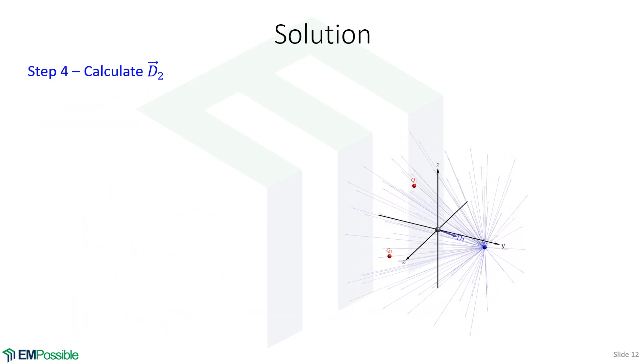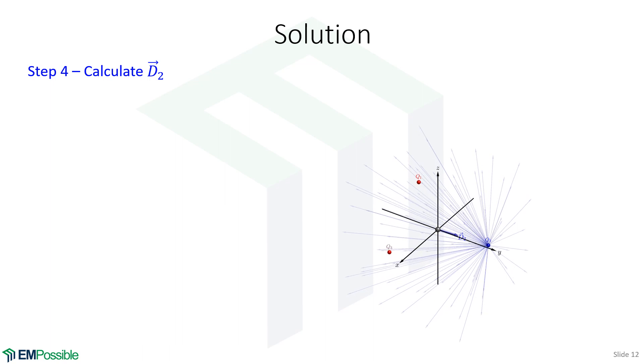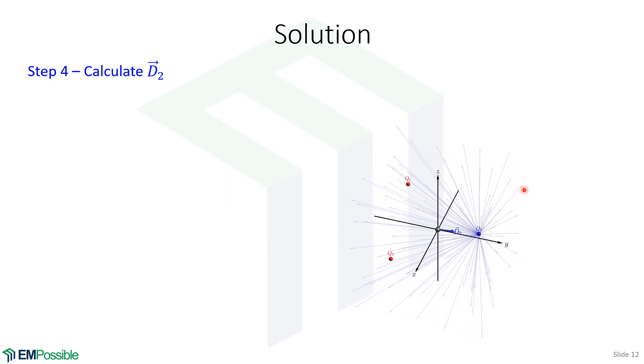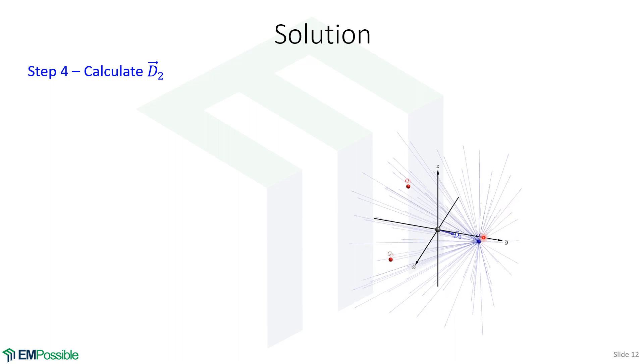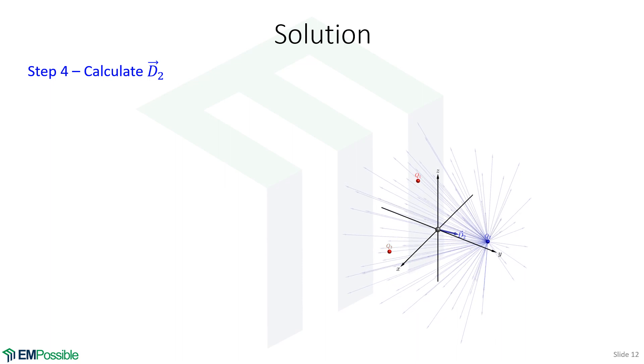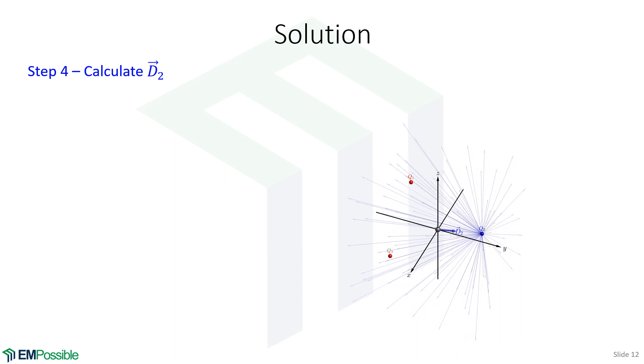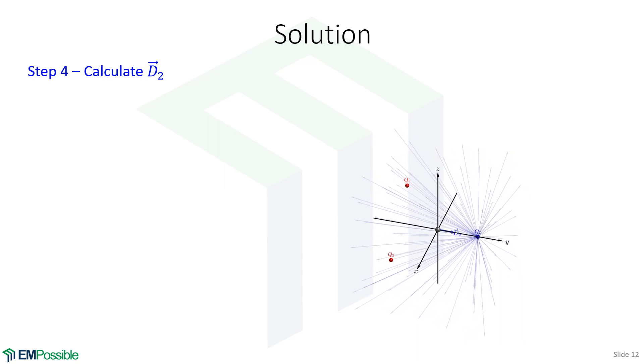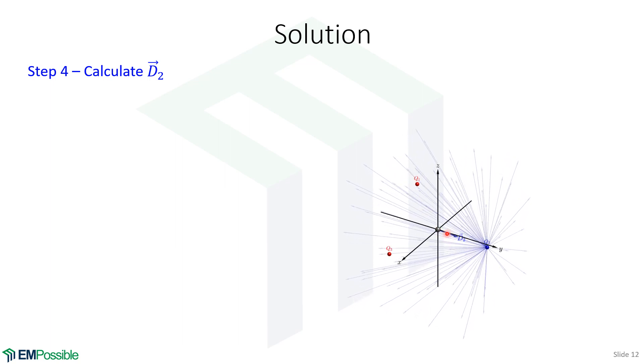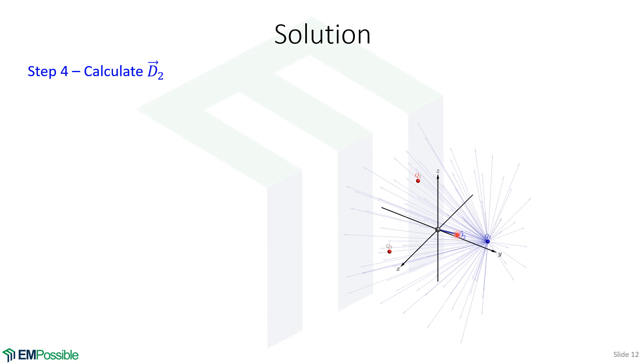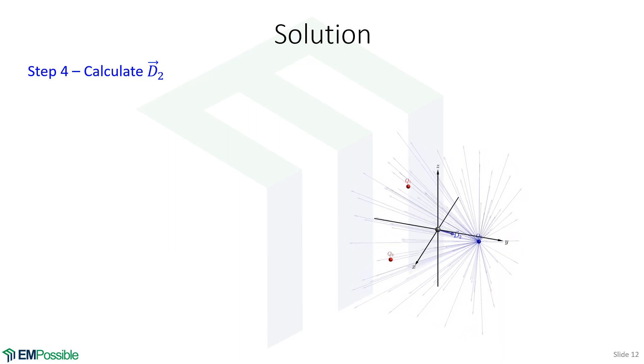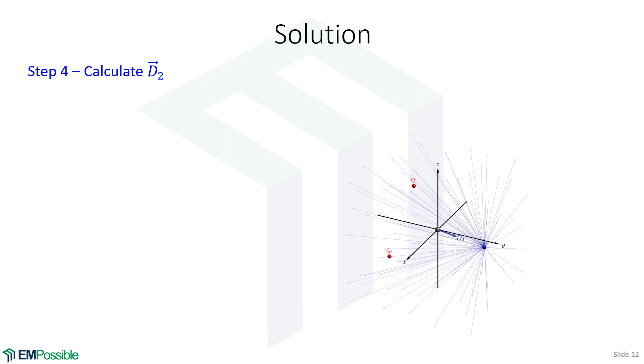Now we're going to repeat this for the second charge. In this case, the second charge is negative. Even though I have the arrows pointing away, they're actually pointing toward the charge. To convey that, I have blue lines instead of red. Since the lines are converging onto that charge because it's negative, we know the electric flux D2 will be pointing in this direction, actually toward the charge because the charge is negative. We're going to repeat the same math we just did.